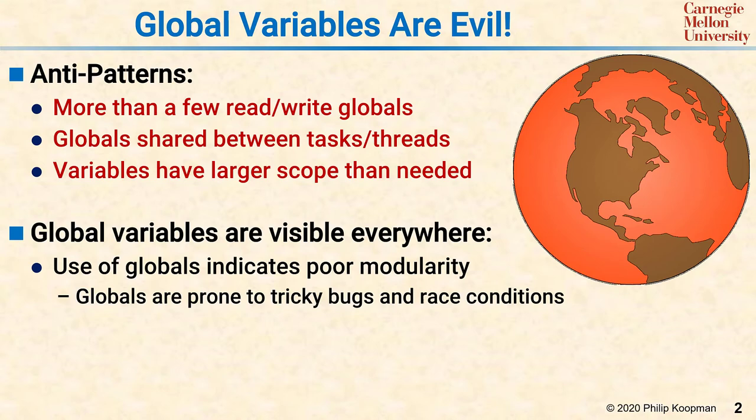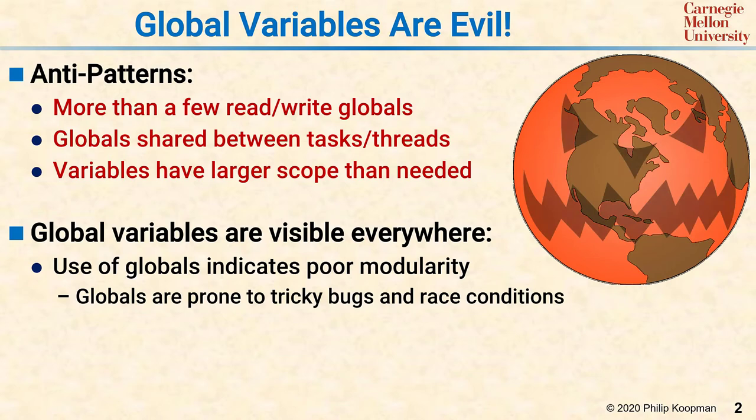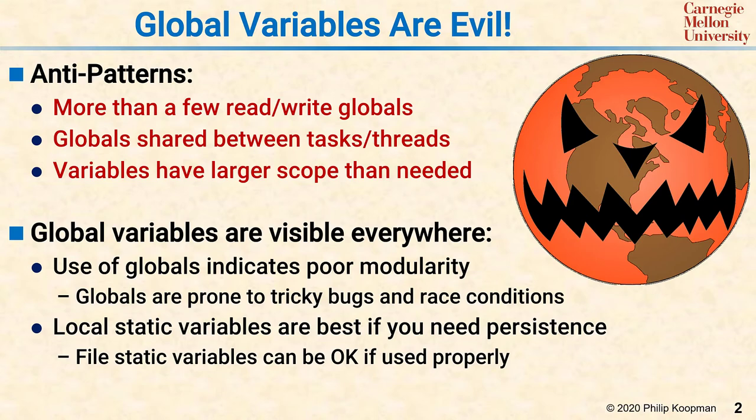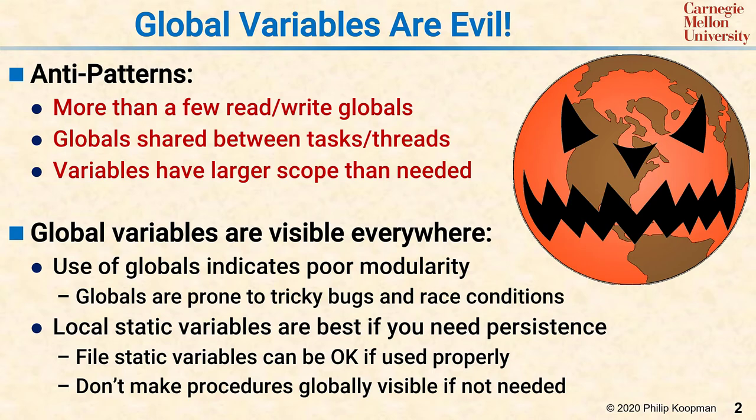In other words, global variables are truly evil. Instead of globals, you should be using local static variables if you can, or file static variables if you must. Along with variables, don't forget that procedures also have a scope, and you should try to minimize the number of procedures that are globally visible.